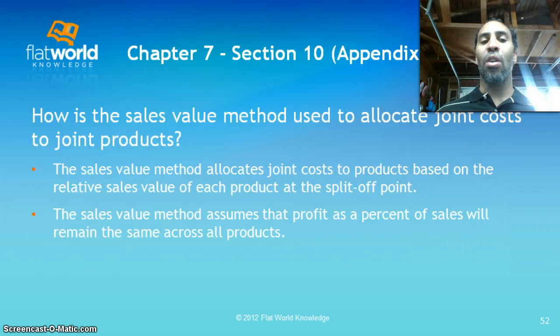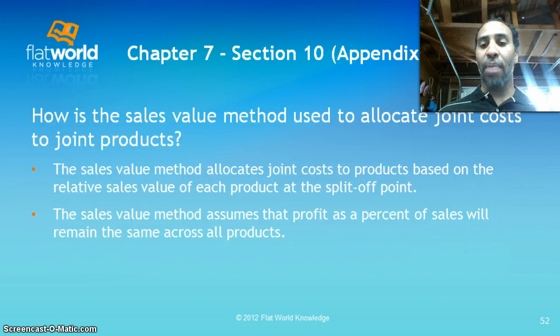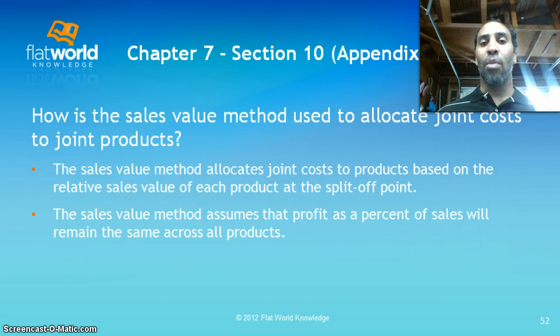The sales value method allocates joint costs to products based on the relative sales value of each product at the split-off point. For instance, a skateboard might cost $100-$120 and a desk $300. The sales value method assumes that profit as a percent of sales will remain the same across all products. If you sell the same number of desks and skateboards, your contribution margin will be greater from the higher-priced item — the numbers will dictate what you should sell more of.